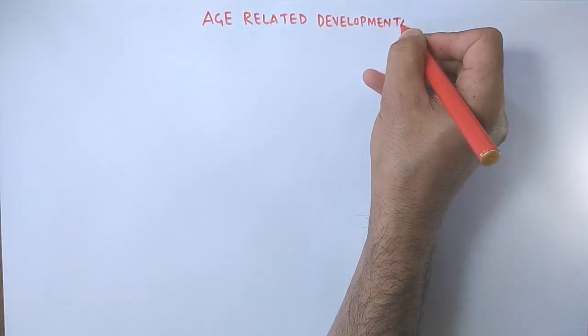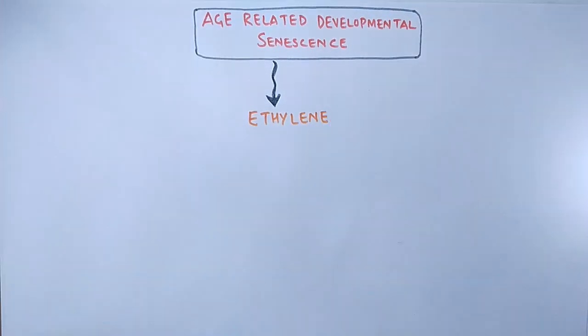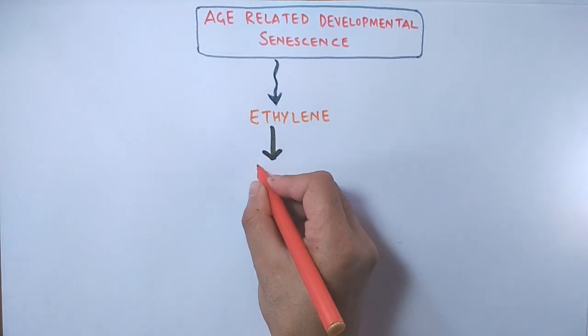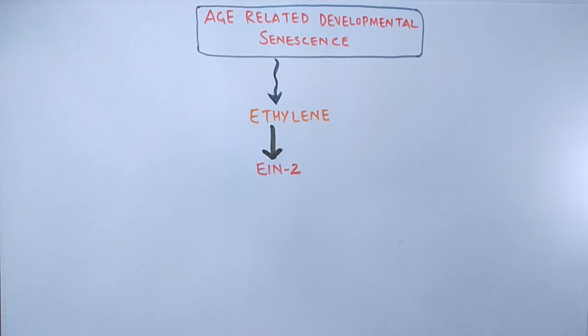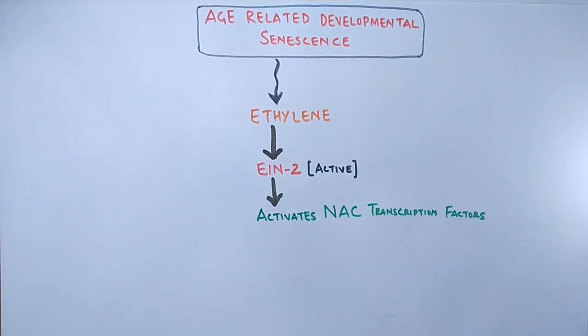Now let us discuss the age-related developmental senescence first. In this pathway, first the presence of ethylene molecules activates the ethylene pathway itself with which the EIN2 is released from the endoplasmic reticulum. And then this EIN2 is translocated to nucleus where it activates NAC transcription factors. NAC is the name of three genes.